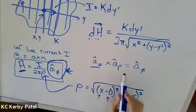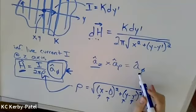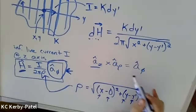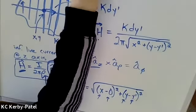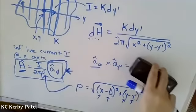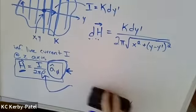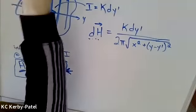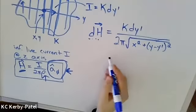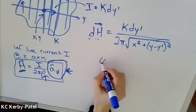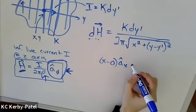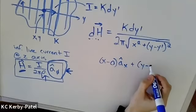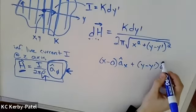So here's how I write my alternative a hat rho. That unit vector is going to be (x minus zero) a hat x plus (y minus y prime) a hat y.